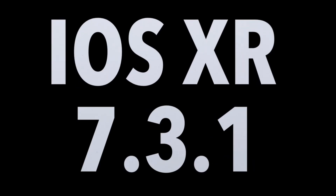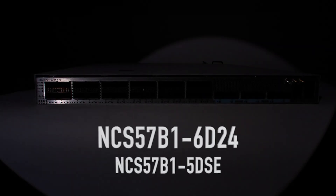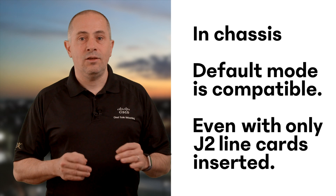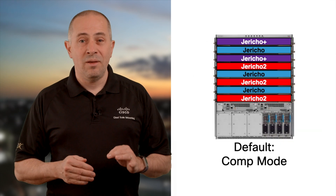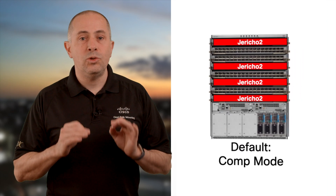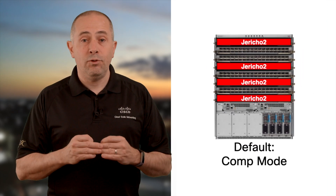Today in March 2021 with XR 7.3.1, the only two fixed systems with J2 are the NCS57B1-6D-24NSC, and we have much more coming in 7.4.1 and 7.5.1. In the modular chassis the default mode is compatibility. It will be the case when the system starts and detects a mix of J, J Plus, and J2 cards — but also if the system is fully populated exclusively with Jericho 2 cards, it will boot by default in compatibility mode, since someone later on might want to insert a J Plus card. We support the mix of all existing line cards — Jericho, Jericho Plus, Jericho 2 — with or without external TCAM. That's what comp mode is made for.